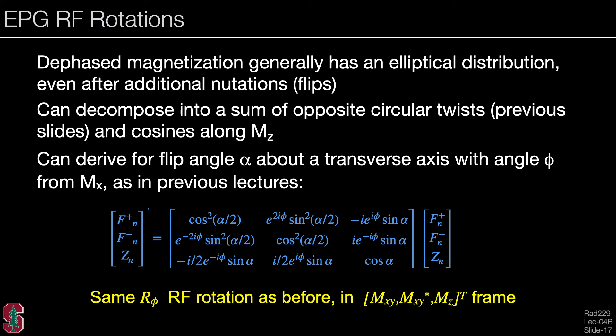So EPG RF rotations can be summarized here. So dephased magnetization generally has this elliptical distribution even after additional notations. And we can decompose this into a sum of opposite circular twists, as well as cosines or sines along Mz. We can derive the, for a given flip angle, the rotation matrix, just as we've done in previous lectures. But this, of course, is a right-handed rotation.